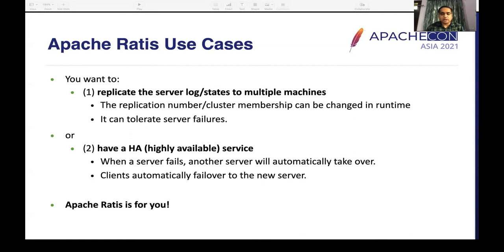There is a RATIS client which automatically performs failover to the right leader. Unless the minimum quorum number of nodes is unavailable, the cluster keeps working. From here, my colleague Nanda will describe how Apache RATIS is used internally in the Ozone HA architecture for both Ozone Manager and Storage Container Manager.